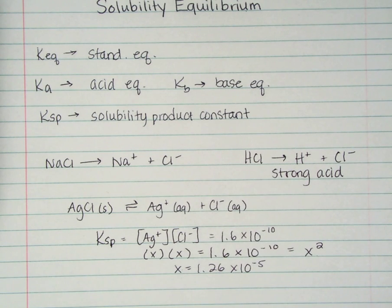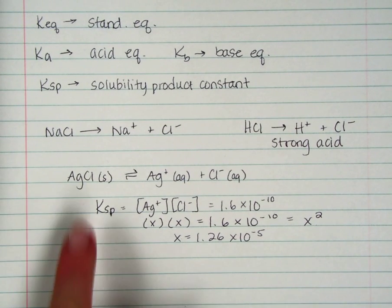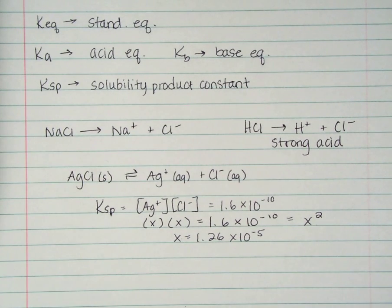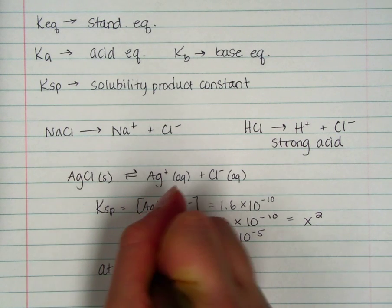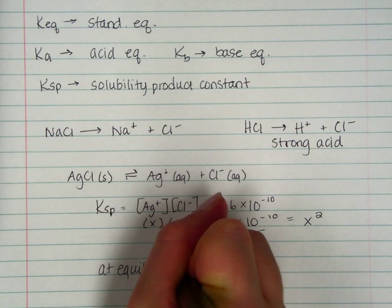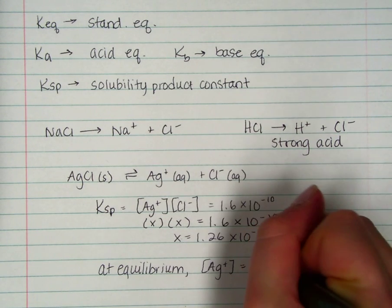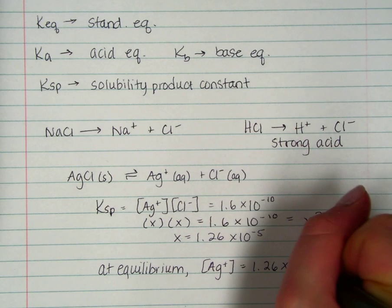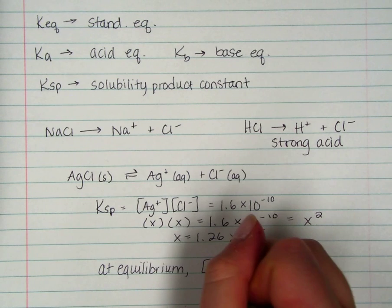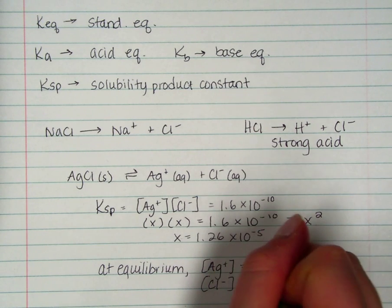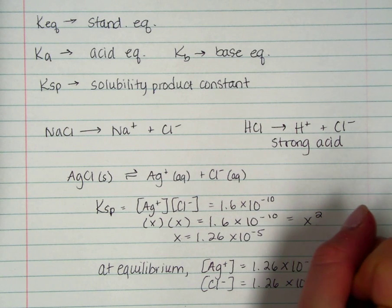Well, what the heck does x mean? If I look at this, what that tells me is if I put some AgCl in water at equilibrium, the concentration of Ag+ is going to be 1.26 times 10 to the negative 5 molar. How do I know that? Because I said Ag+ was x. The concentration of Cl- is going to be 1.26 times 10 to the negative 5 molar.